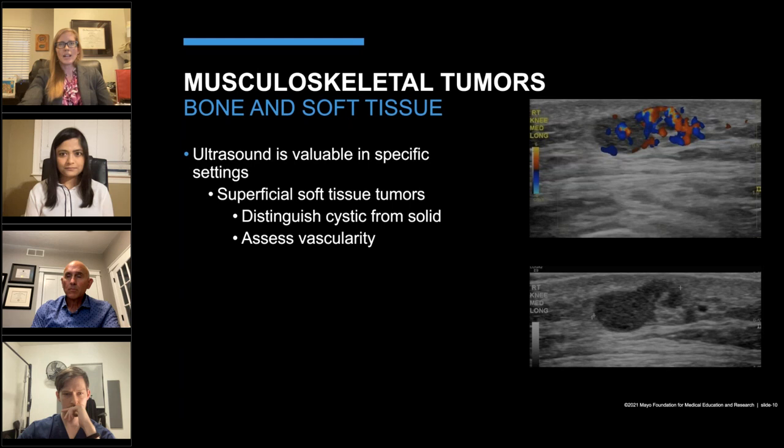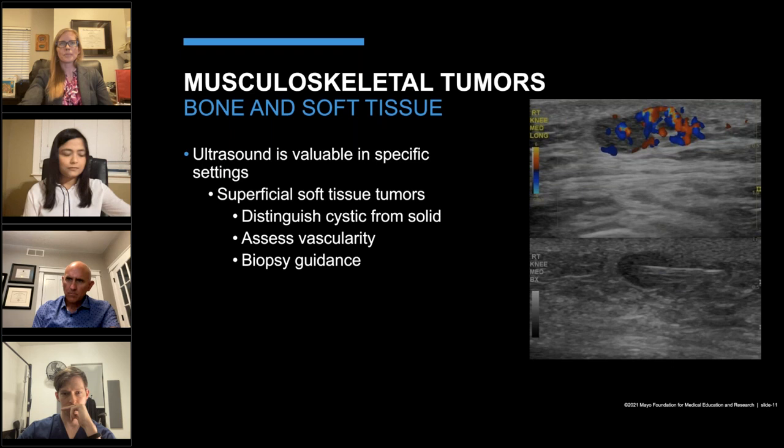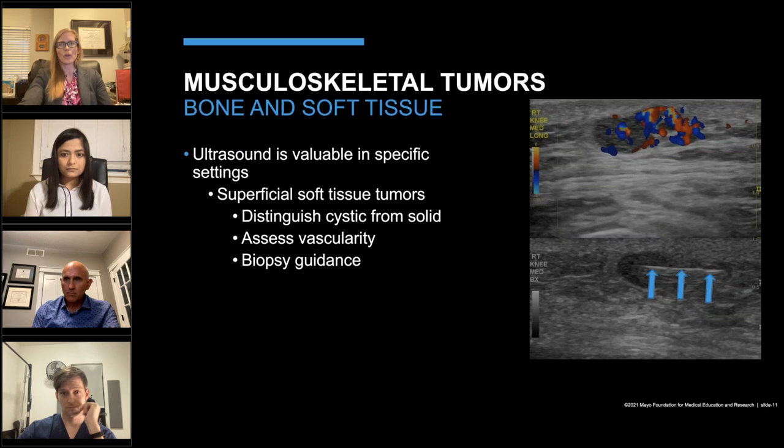We interrogate any palpable soft tissue mass with Doppler to determine vascularity. In that small solid mass we see it is quite hypervascular with a prominent feeding vessel. For soft tissue masses, our go-to modality for biopsy guidance is ultrasound. In this bottom image, we can nicely see the thin hyperechoic needle spearing the center of the mass — this turned out to be a benign glomus tumor.